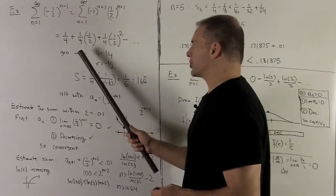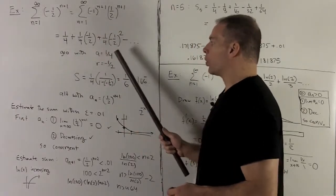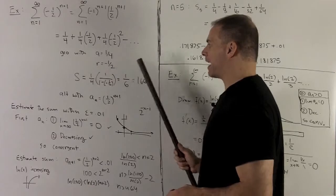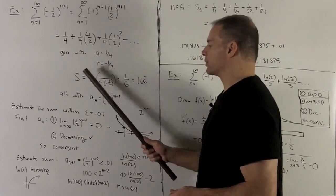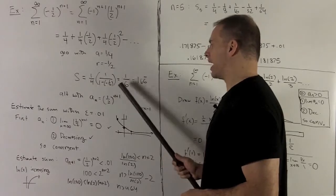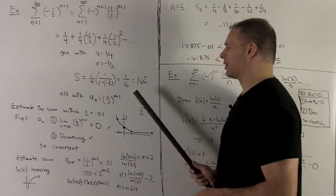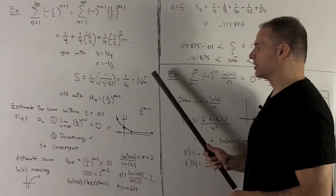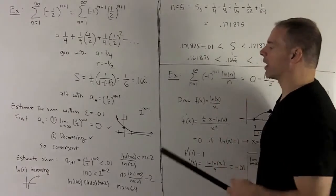Okay, now note, for the geometric series, we're going to have a equal to 1 quarter, r equal to minus 1 half. So I can get the sum. The sum is going to be equal to 1 fourth, 1 over 1 minus minus 1 half, which gives me 1 sixth, which is equal to .166, and that repeats forever.